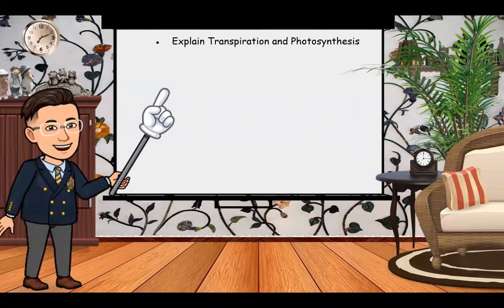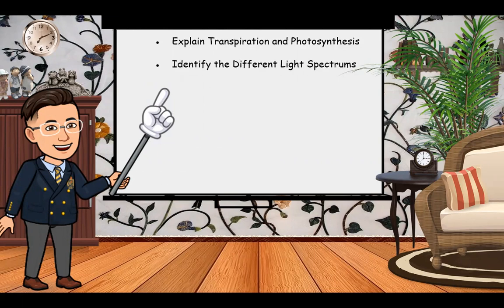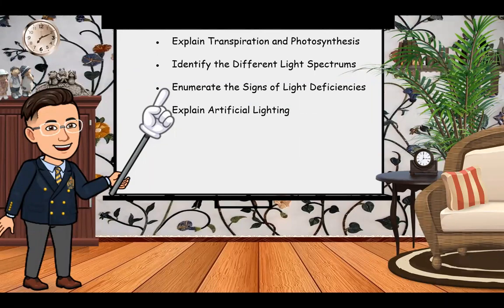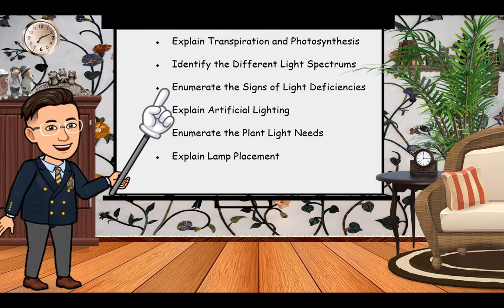Number one: explain transpiration and photosynthesis. Number two: identify the different light spectrums. Number three: enumerate the signs of light deficiencies. Number four: explain artificial lighting. Number five: enumerate the plant light needs. Number six: explain lamp placement. And lastly, number seven: identify the types of lights for plant growth.